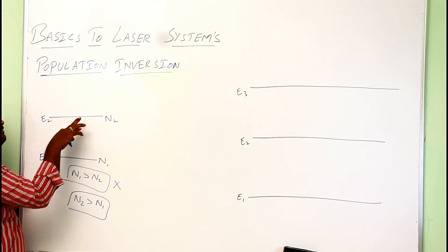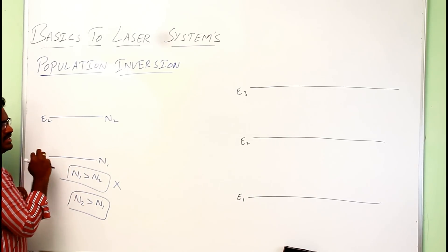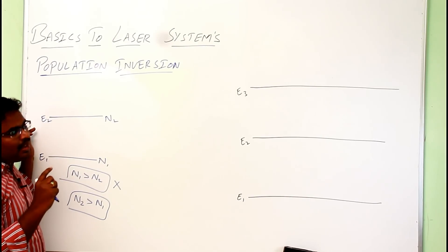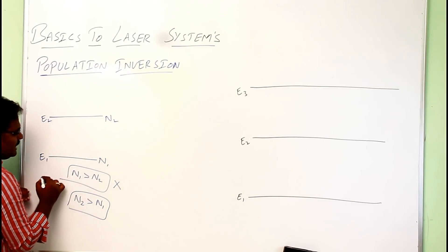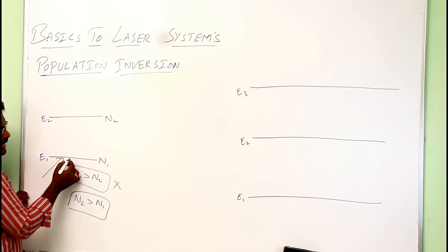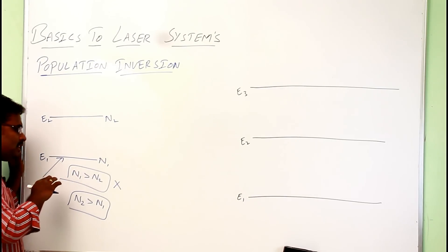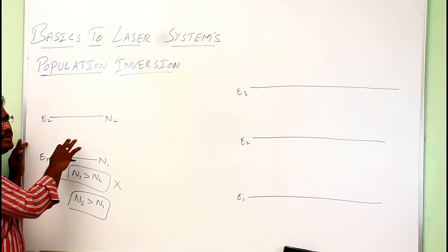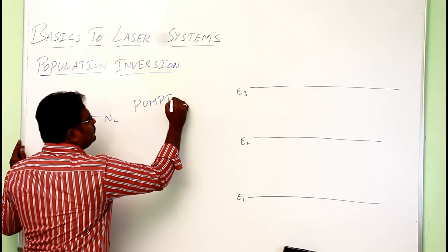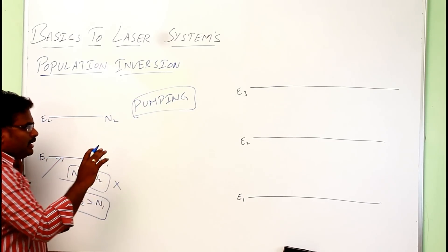Maintaining more atoms in the excited state than in the ground state is known as population inversion. To achieve this, we have to send atoms from the ground state to the excited state. We need to supply energy to the atoms in the ground state so they absorb it and go to the excited state. Raising atoms from ground state to excited state is known as pumping, which we will discuss later in detail.